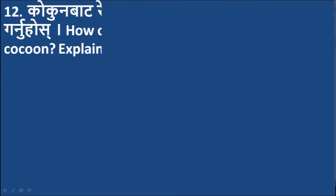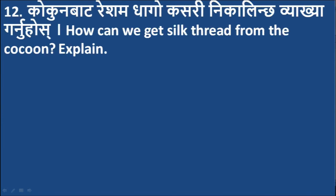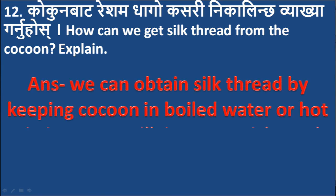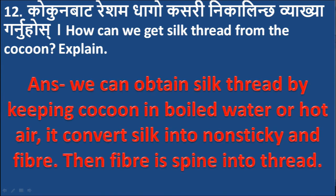Question 12: How can we get silk thread from the cocoon? Explain. Answer: We can obtain silk thread by keeping the cocoon in boiled water or hot air, which converts silk into non-sticky fiber. The fiber is then spun into thread.